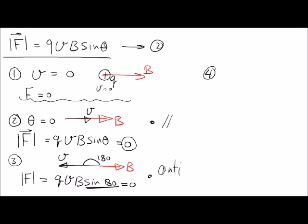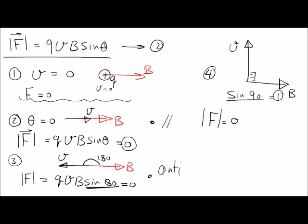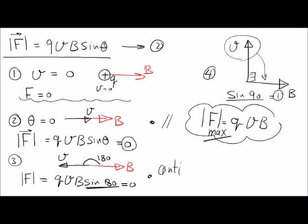Case four: what if the velocity is perpendicular to the magnetic field? The angle is 90 degrees, and sin 90 equals 1, the maximum value of sine. So the force magnitude equals QVB — this is the maximum value of the force. The maximum force is obtained when the charge moves perpendicular to the magnetic field, at an angle of 90 degrees.